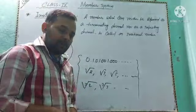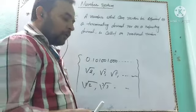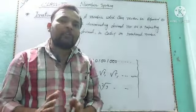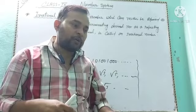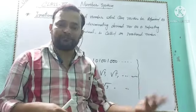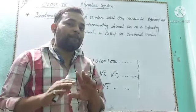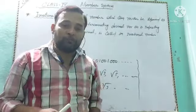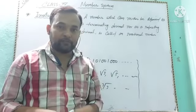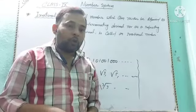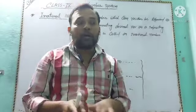What is a rational number? In the previous video lecture, we discussed rational numbers. A rational number can be expressed as a decimal — either a terminating decimal or a repeating (recurring) decimal. Both terminating and recurring decimals are rational numbers.